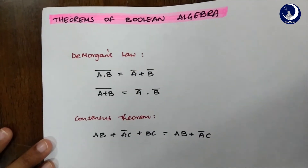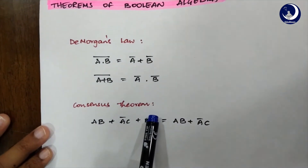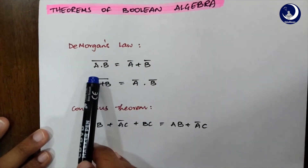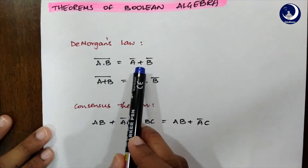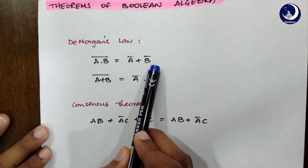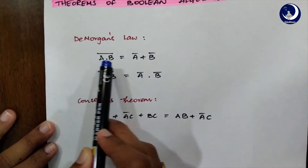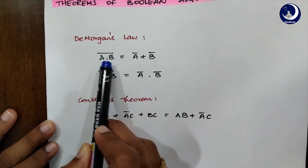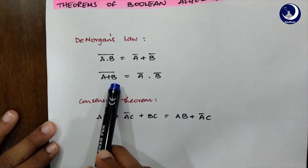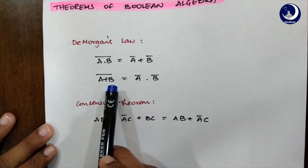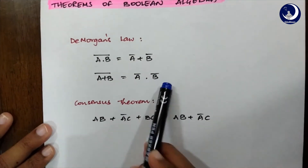Now we have two important theorems of Boolean algebra: De Morgan's theorem and the consensus theorem. De Morgan's theorem states that (A·B)' = Ā+B̄. How do we get that? We are just taking the complement of each term: A complement is Ā, AND complement becomes plus, B complement is B̄. Similarly, (A+B)' = Ā·B̄ — plus complement is dot, and B complement is B̄.